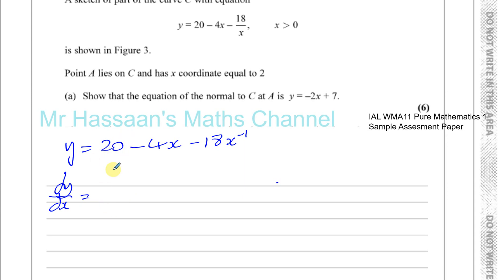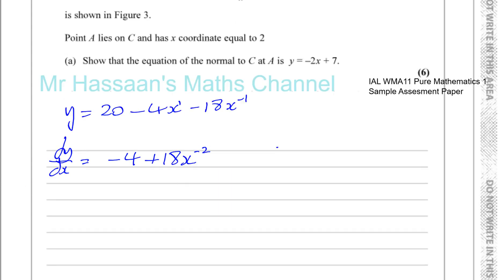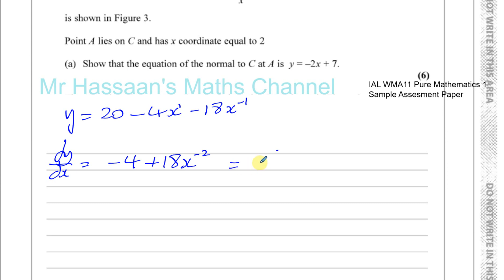The constant 20 disappears. Minus 4 times x: multiply by the power of 1, giving minus 4, then take 1 from the power giving x to the power of 0 which is 1, so we get minus 4. For the 18x to the minus 1 term: multiply by the power minus 1 to get plus 18, and take 1 from the power to get x to the minus 2. So dy/dx equals minus 4 plus 18 over x squared.